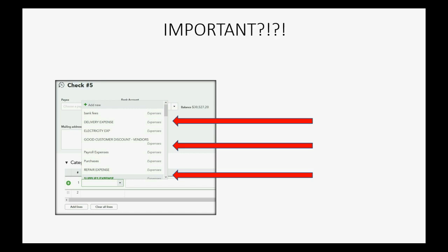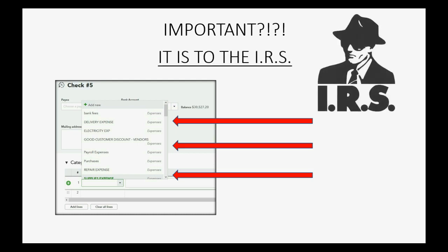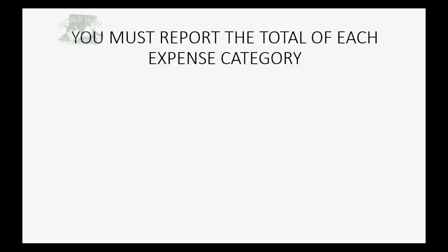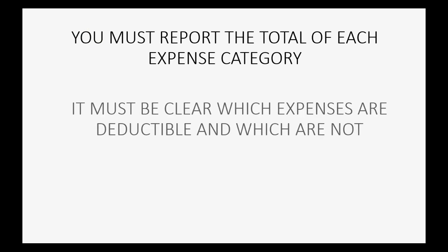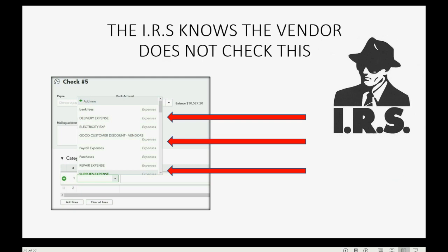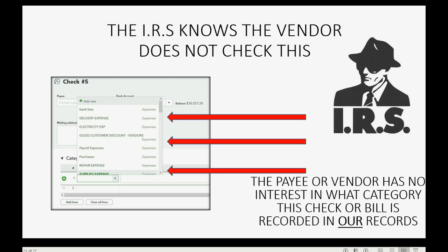Is that important to get correct? It's important to the IRS because you have to make sure that you categorize your expenses correctly in your books in order for your taxes to be correct. You must report the total of each expense category to the IRS when you do your taxes, and it must be clear which expenses are deductible and which are not. The IRS knows there is no independent check on the expense category — the payee or vendor has no interest in what category that check or bill will be recorded in your own records, and they would not be able to check that anyway.